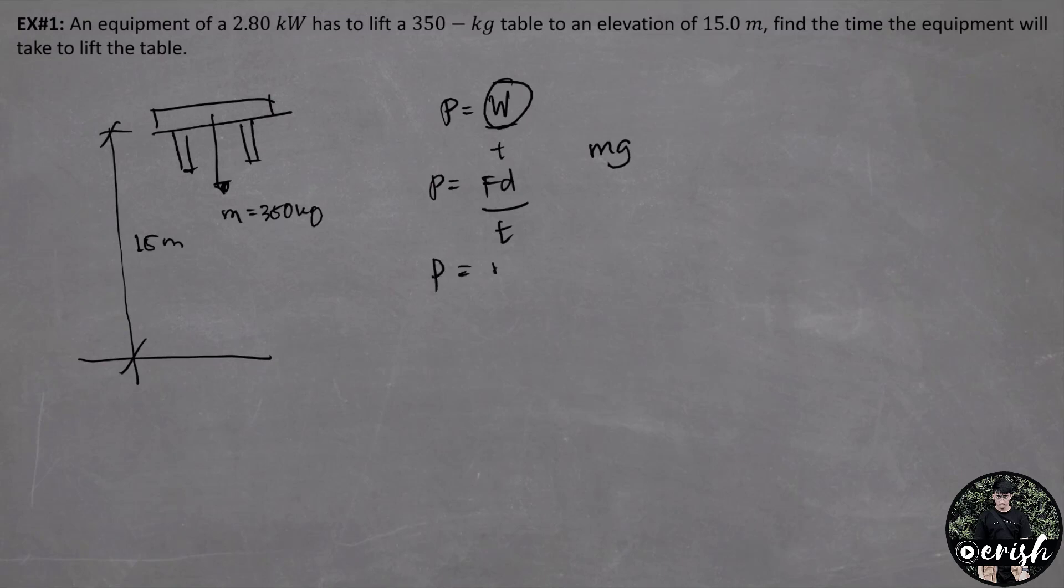Now, power is equal to mass times gravity times the distance over time. And the distance is the height of 15 meters. We have given a value of power, 2.8 kilowatts. We know the mass and the gravity which is 9.81 meters per second square acceleration. And the height is 15 meters.